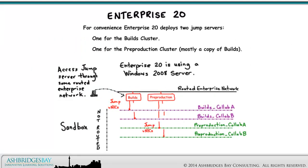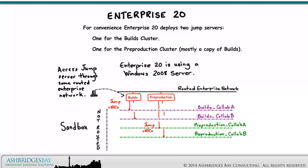For convenience, Enterprise 20 deploys two Jump Servers — one for the builds cluster and one for the pre-production cluster. This second server is mostly a copy of the builds. This makes it easier in that we don't have to change the VNIC configuration on the Jump Server to switch between the two clusters, and we don't have to worry about replication issues associated with having no routing between the VLANs in a cluster when the Jump Server is in the other cluster.